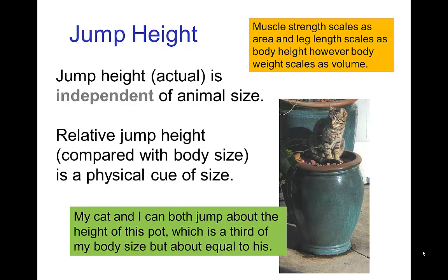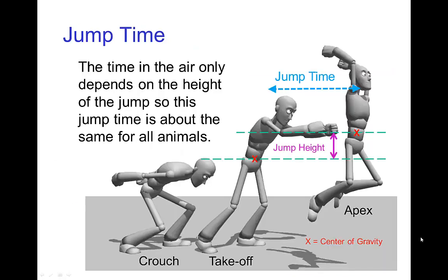Now compared to his height, my cat can jump quite high. He can jump on top of this pot which is about equal to his height, and it's about a third of my height. The time in the air only depends on the height of the jump. So when my cat and I jump, we spend about the same amount of time in the air because we jump to about the same height.